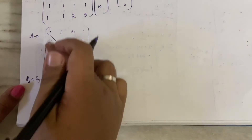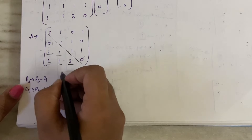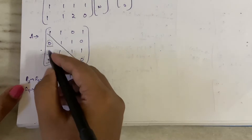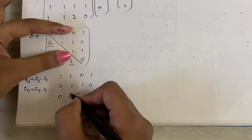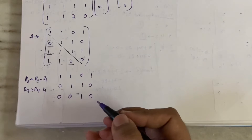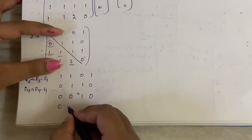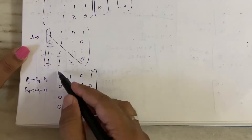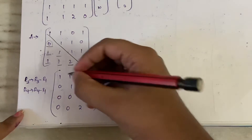Apply R3 = R3 − R1: (1−1, 1−1, 1−0, 1−1) = (0, 0, 1, 0). Apply R4 = R4 − R1: (1−1, 1−1, 2−0, 0−1) = (0, 0, 2, −1). After these operations the matrix becomes [1, 1, 0, 1; 0, 1, 1, 0; 0, 0, 1, 0; 0, 0, 2, −1].